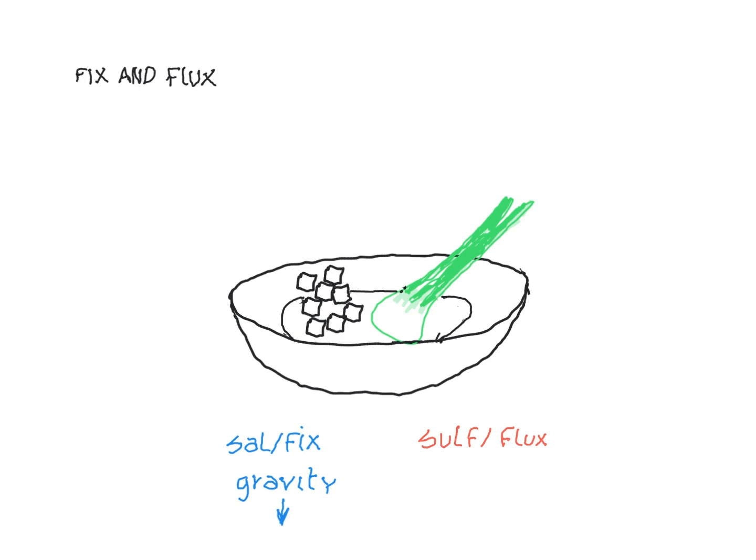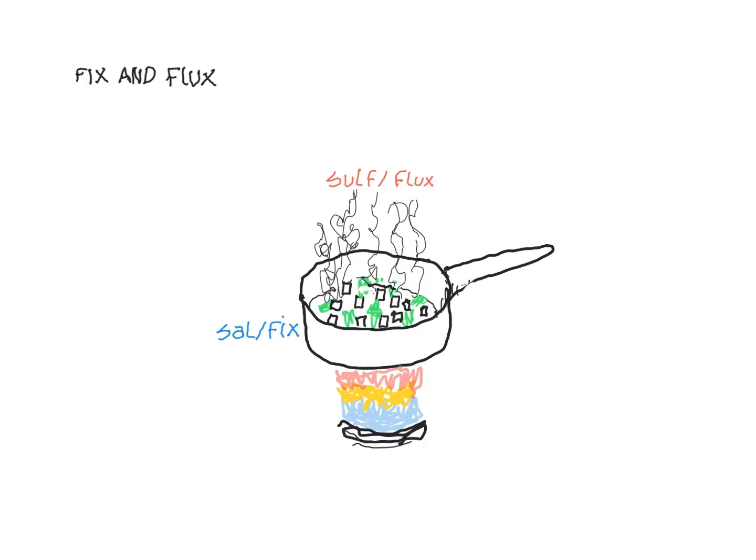You ask that the cook, who you know as an alchemist, to put fire under the earth to push the vegetables more towards the levity pole. The cook puts the burner on, and that pushes the water to change its phase towards levity — from being a liquid, which is sal-fix, to being a vapor, which is sulf-flux.